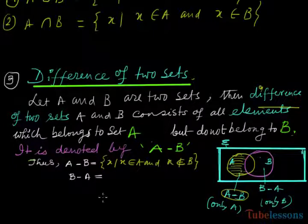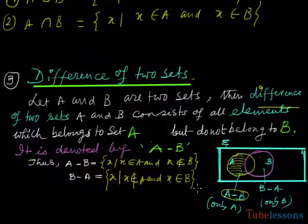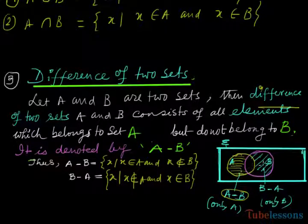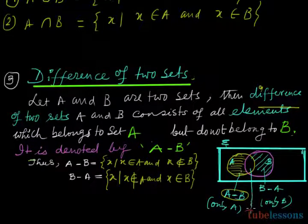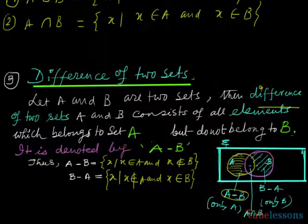Similarly, we can define B minus A as x such that x does not belong to A and x belongs to B. In the Venn diagram, B minus A is the part that is only in B, excluding the intersection of A and B. Using this diagram we can say that A minus B, A intersection B, and B minus A are mutually exclusive.